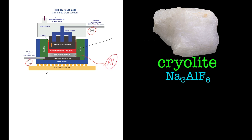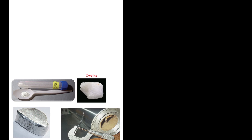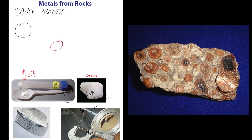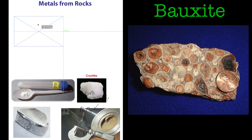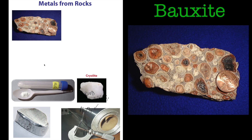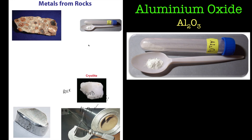So you've basically started off from a rock. We started off with bauxite, which is a rock, and we converted it into aluminium oxide - there's a white powder on the spoon there. So we went from that rock to that white powder.